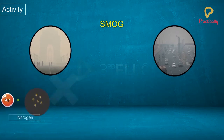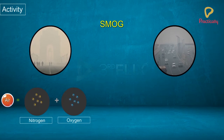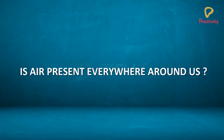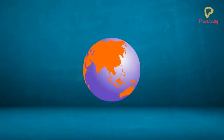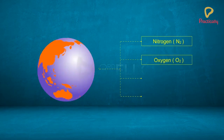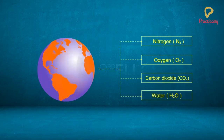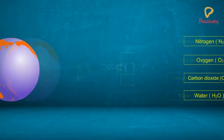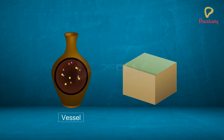Air is a mixture of nitrogen, oxygen, carbon dioxide, water vapour, dust particles, etc. Is air present everywhere around? Let us try to prove this fact by performing a small activity. Our atmosphere comprises nitrogen, oxygen, carbon dioxide and water vapour. Air occupies space — it fills in empty vessels and containers.